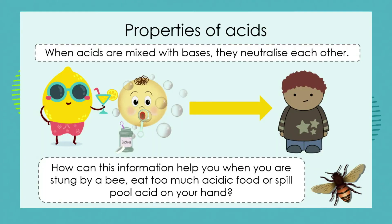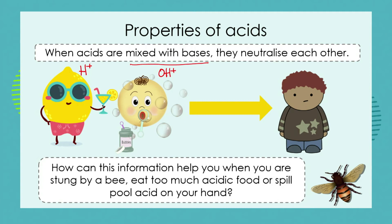Another property, apart from sour taste and corrosiveness, is that when acids are mixed with bases they neutralize each other. Acids have high concentrations of hydrogen ions and bases have high concentrations of hydroxide ions. When acids and bases combine, the positive ions equal the negative ions, and we're left with a neutral substance that is not going to burn or corrode in any way.